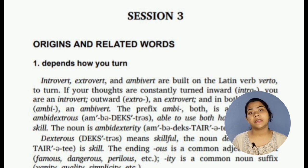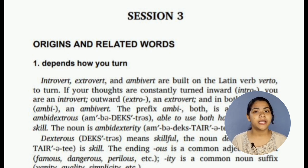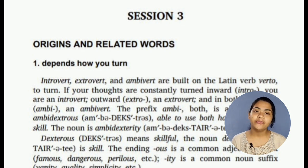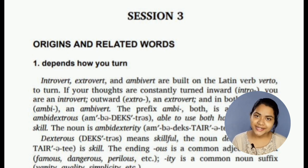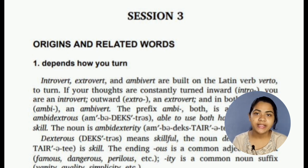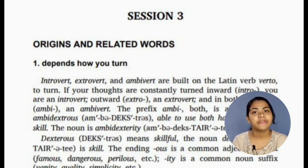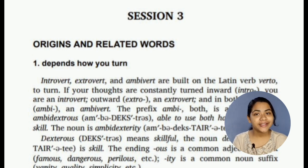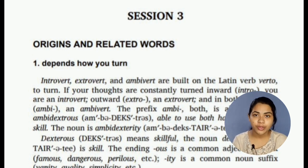Synonyms for ambidextrous are skillful, expert, extraordinary, etc. The noun form of ambidextrous is 'ambidextrality.' The next word is 'dextrous,' which means skillful. The noun form of dextrous is 'dexterity.'